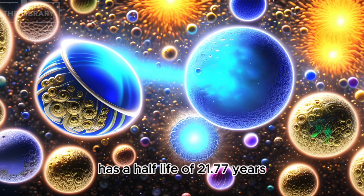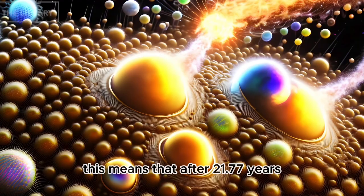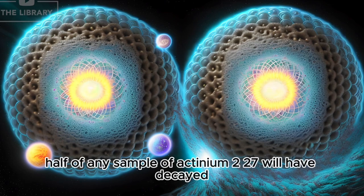This means that after 21.77 years, half of any sample of actinium-227 will have decayed, transforming into other elements and releasing energy in the process.